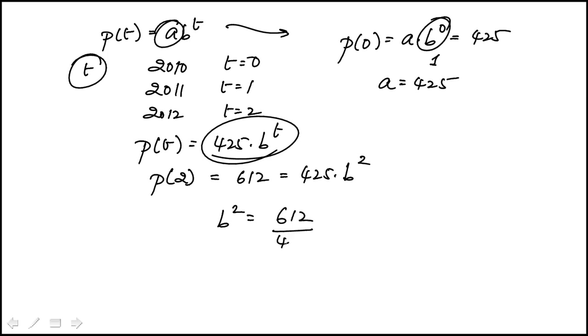If you compute this, this turns out to be 1.44. You'll recognize 12 squared is 144, so b is 1.2.